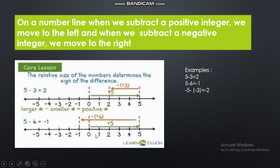Next, how to find subtraction on a number line. For example, 5 minus 3: find the position of 5 and, while doing subtraction of 2 positive integers, move to the left of the number line. Take 3 jumps to the left of 5 and we get the answer 2. Similarly, for 5 minus 6: starting at 5, take 6 jumps to the left — 1, 2, 3, 4, 5, 6 — and the answer is minus 1.